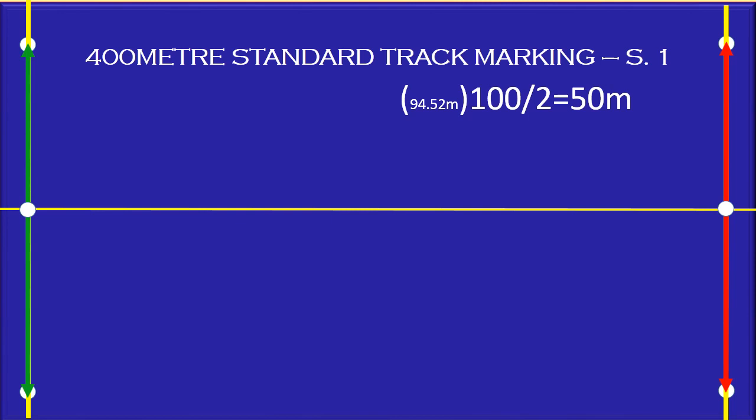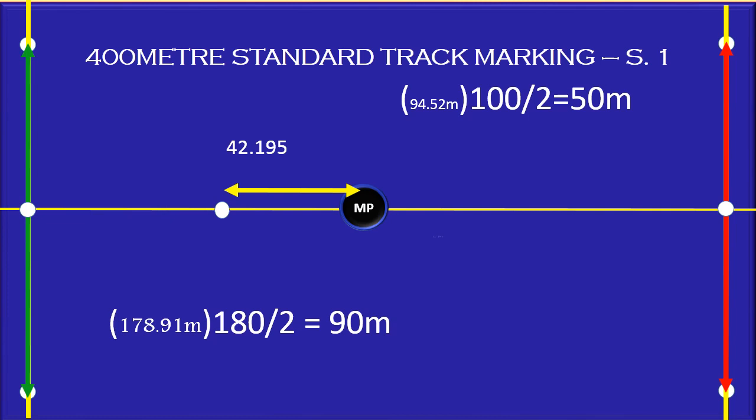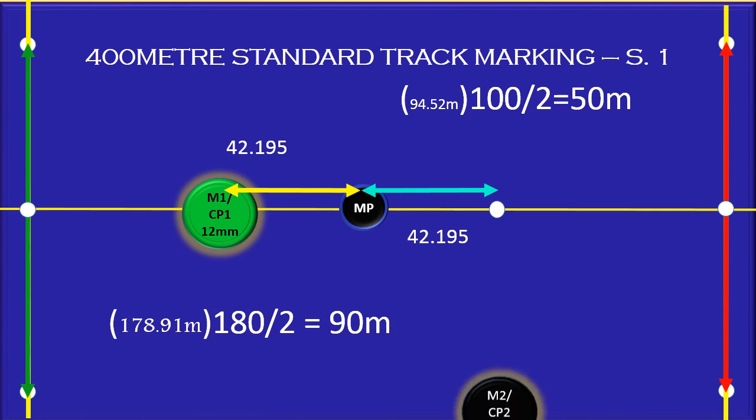Already, we knew that the recoil length is 178.91 meters. Here, easy to understand, I took 180 divided by 2, 90 meters. This is the midpoint to entire track. From the midpoint, measure 42.195 meter on either side of the track horizontal divide line. This is midpoint M1 or center point C1 and this is midpoint M2 or center point C2.